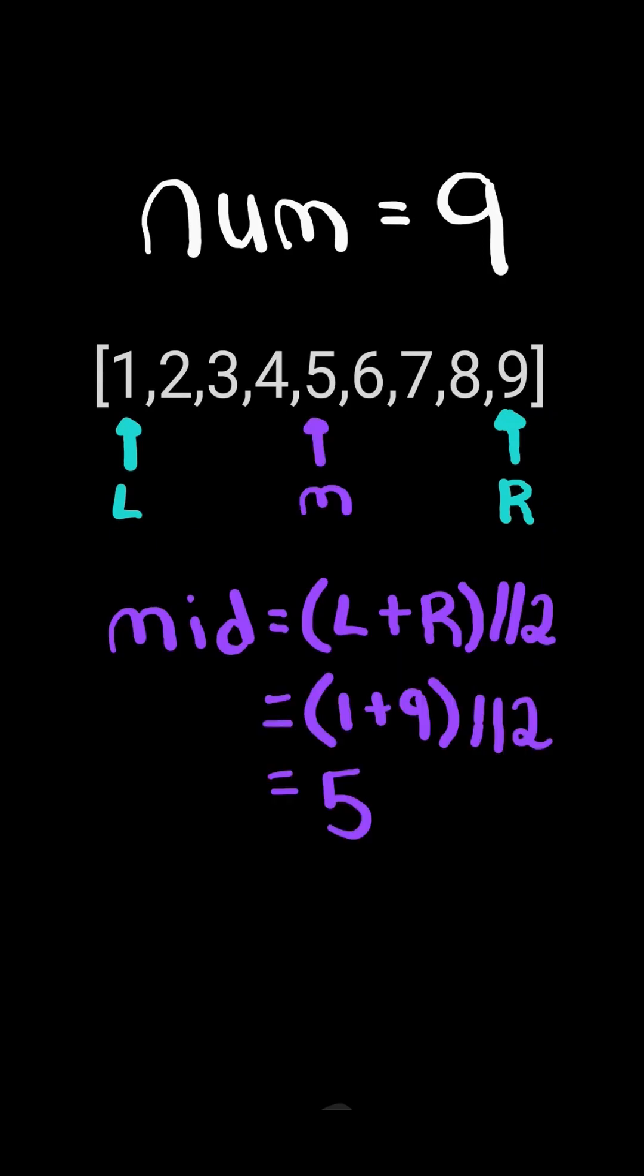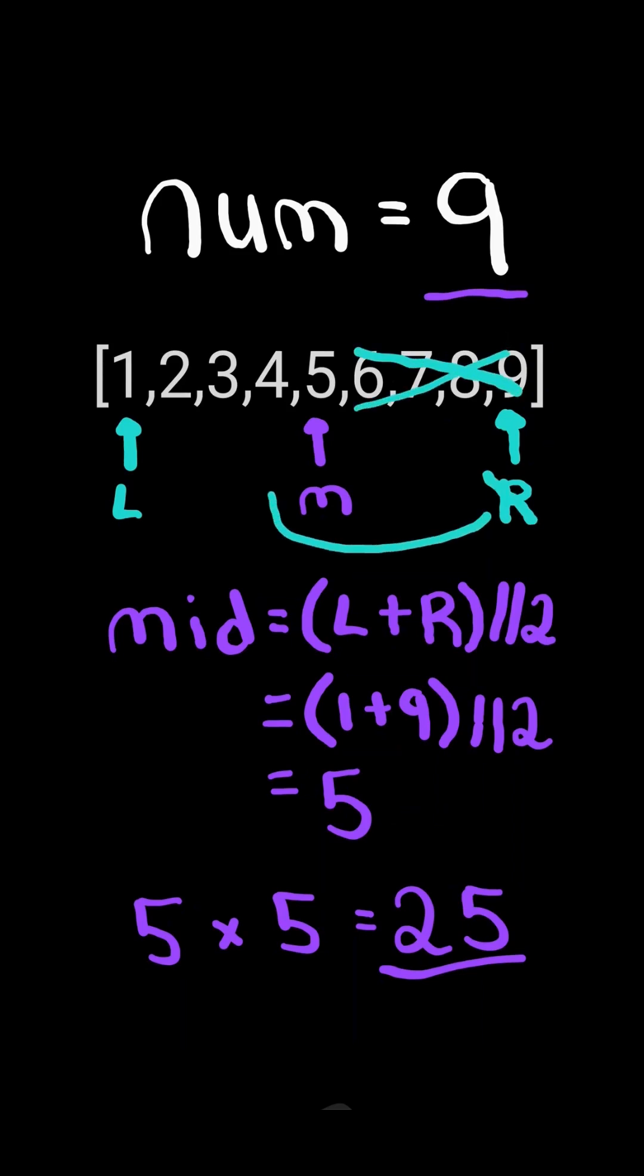We calculate the midpoint. This gives us 5. We calculate 5 times 5. It's greater than num, so we can ignore the values to the right of mid and decrease our right pointer to mid minus 1.